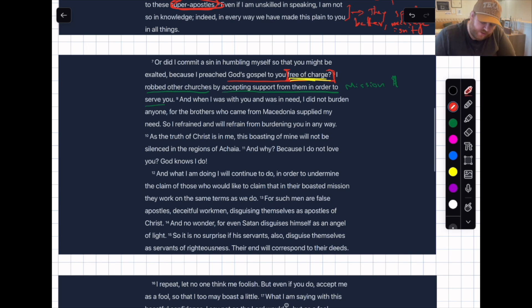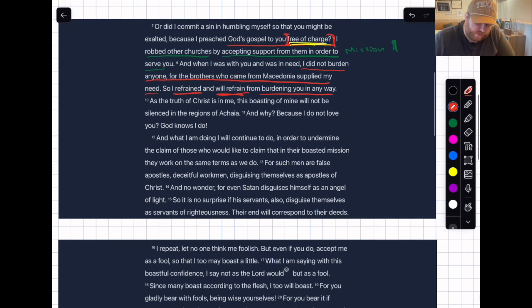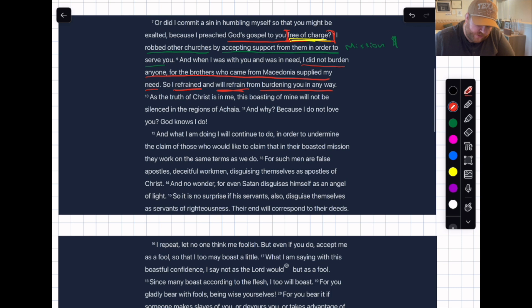When I was with you and was in need, I did not burden anyone, for the brothers who came from Macedonia supplied my needs. He's saying these super apostles show off their money, but I didn't ask you for money because I had been given what I needed. So he said I refrained and will refrain from burdening you in any way. My guess is that these super apostles were asking for money. As the truth of Christ is in me, this boasting of mine will not be silenced in the regions of Achaia. And why? Because I do not love you? God knows I do. So he's coming around, this rhetorical question followed immediately by the answer.